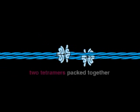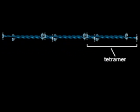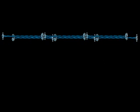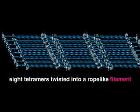Tetramers then link end to end, thus building up one strand of an intermediate filament. A total of eight strands stack together and twist around each other to create the intermediate filament. This stacking provides the extensive lateral contacts between the strands that give the filament its remarkable mechanical strength.